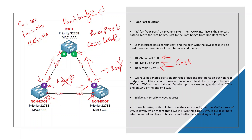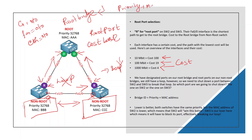We will select one port as the root port. We will select an alternate port. We will select the bridge idea. If we block the two ports, we will block the loop. We will select the last one as alternate. The Bridge ID is priority plus MAC address. The priority is 32768 by default. This is the same calculation.